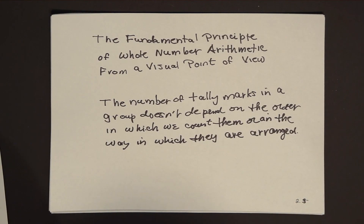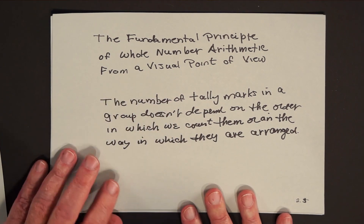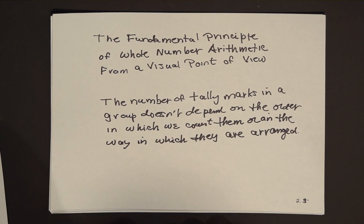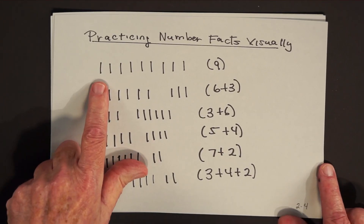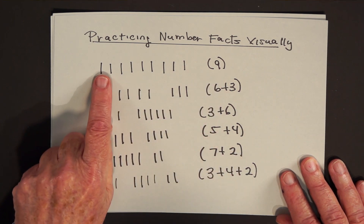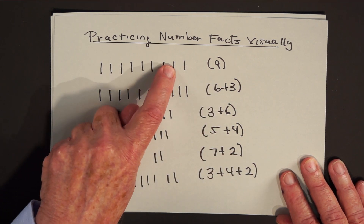This brings us again to what I mentioned in our first lesson — the most important part, which I call the fundamental principle of whole number arithmetic from a visual point of view: the number of tally marks in the group doesn't depend on the order in which we count them or the way in which they are arranged. That might sound trivial, but we can introduce this to youngsters at an age where they haven't even learned the names of the numbers yet. Even if a student has never seen the digit 9, they can recognize 9 tally marks — counting 1, 2, 3, 4, 5, 6, 7, 8, 9 of them.